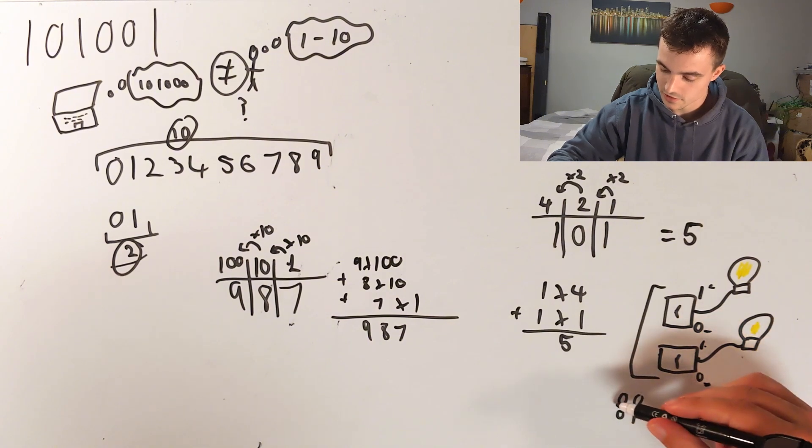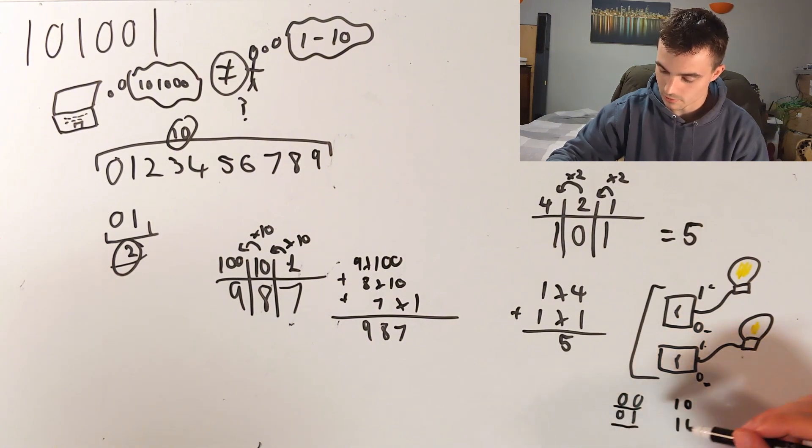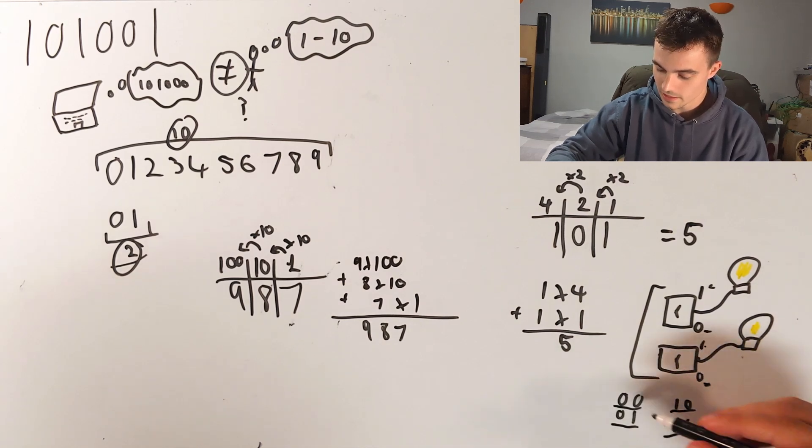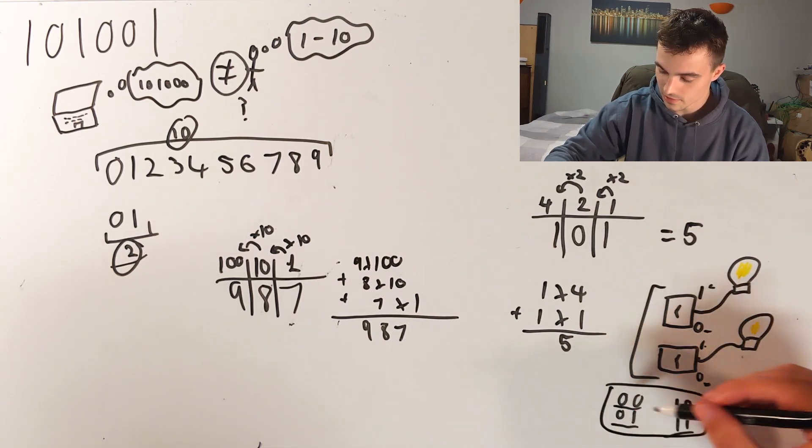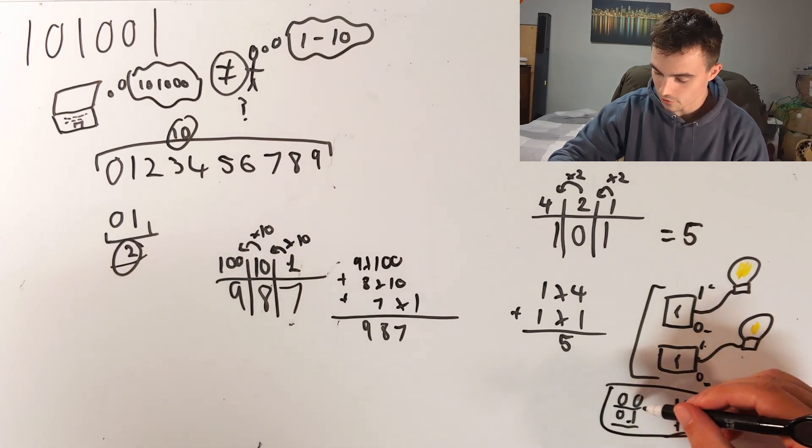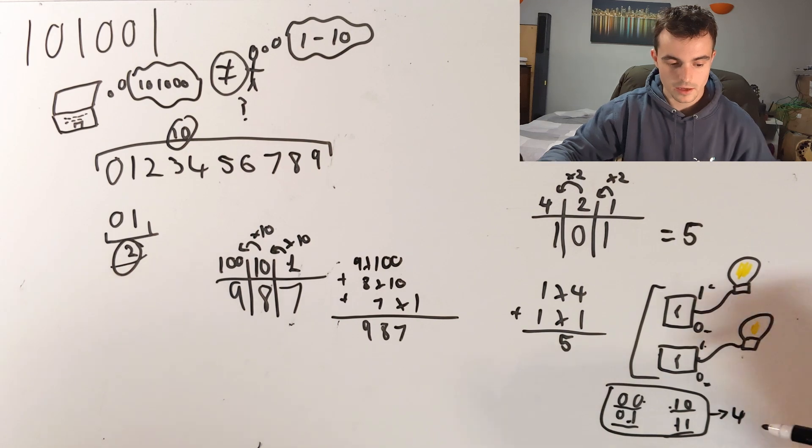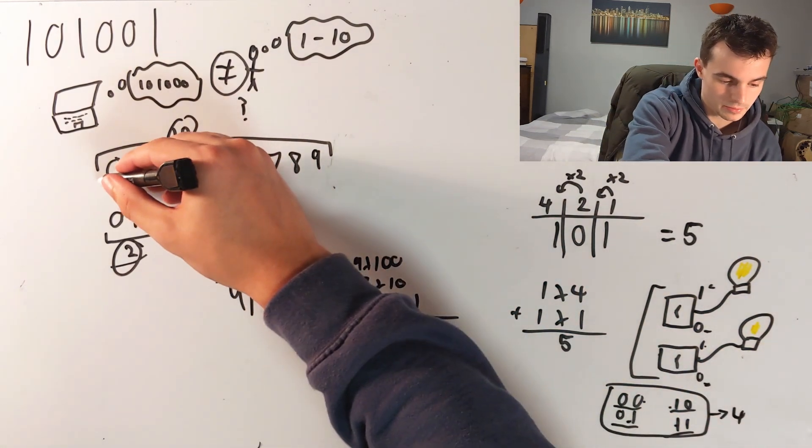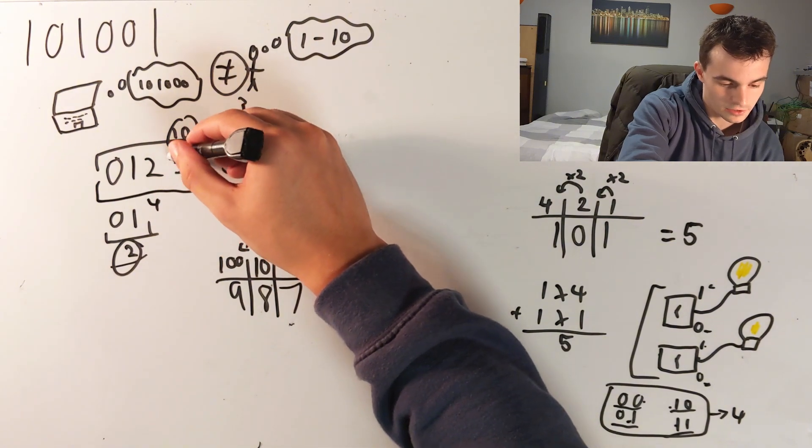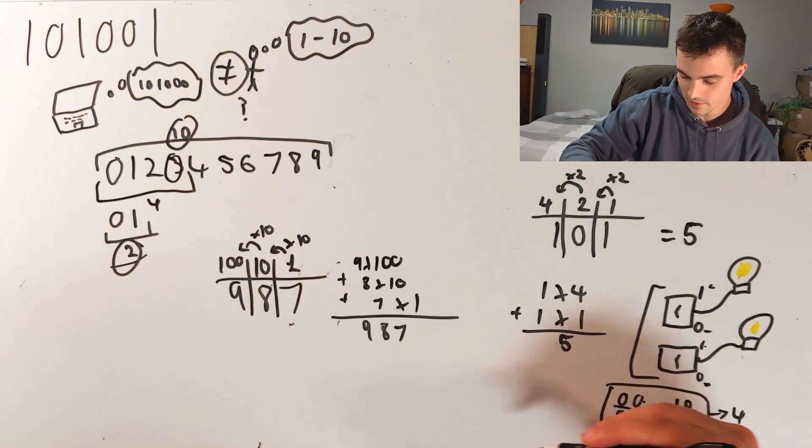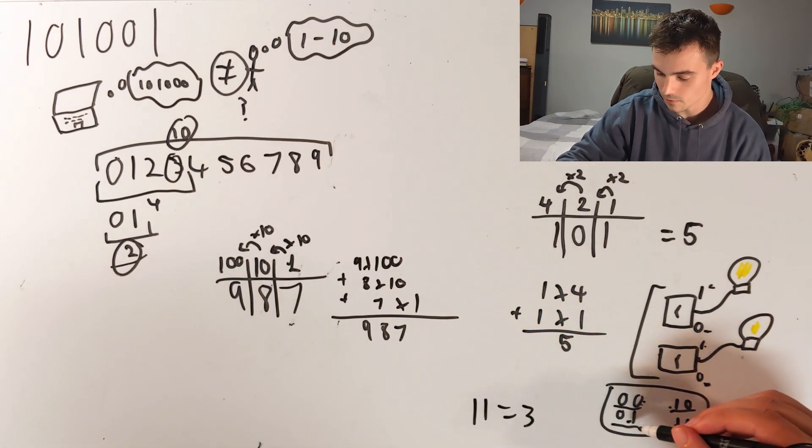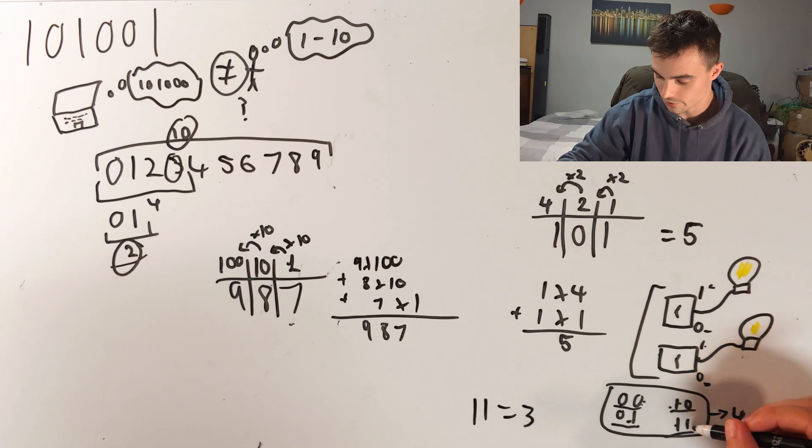So we have zero zero, zero one, one zero, one one. And this has four combinations. But if we go here, this is four. So the highest one is three. So one one equals three. So we have zero, one, two, three.